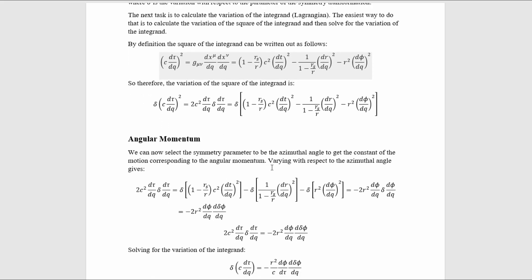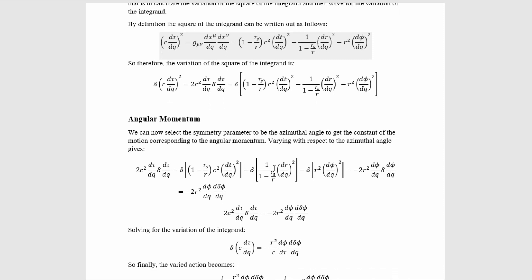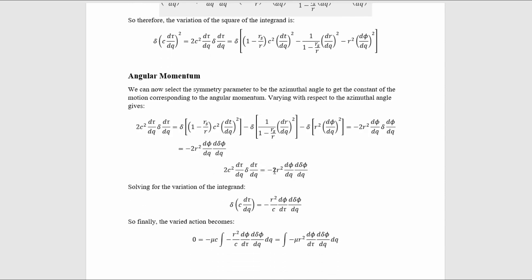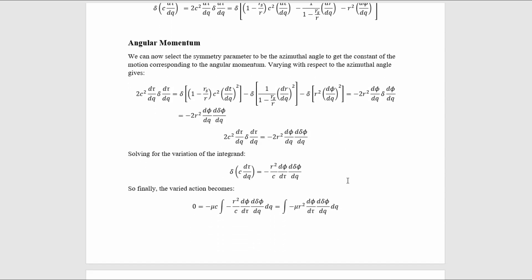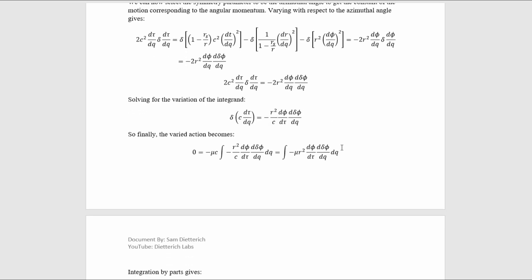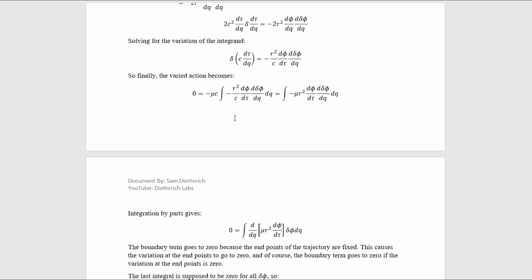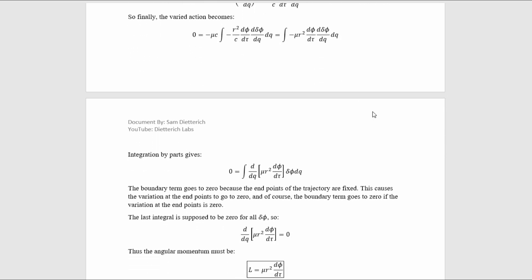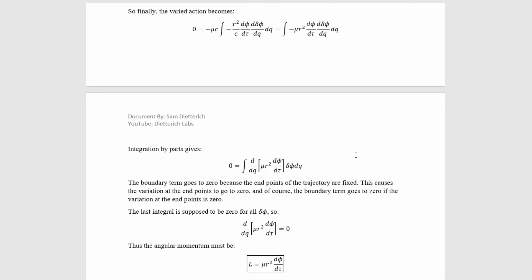Let's take the symmetry parameter to be the azimuthal angle to get the angular momentum. The only term that depends on the azimuthal angle is this here, so that's the only term that survives the variation. We can apply the power rule again to get from this term to that term. And then we're free to permute this variation with this derivative, so we have this result. So ultimately we have this equality, which allows us to solve for the variation of the integrand, which is just this. If we substitute that back into the action, we arrive at this, which allows us to integrate by parts.